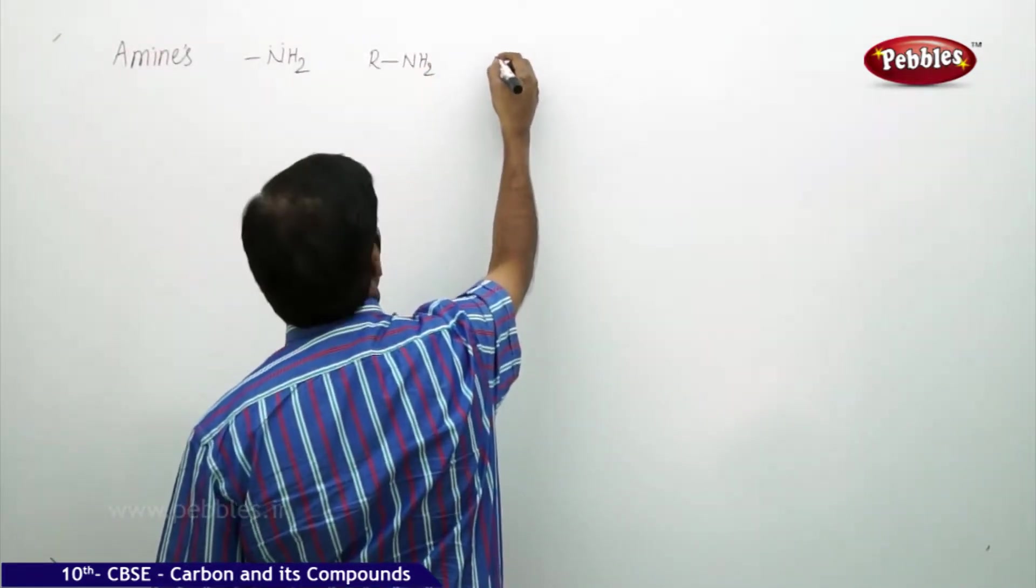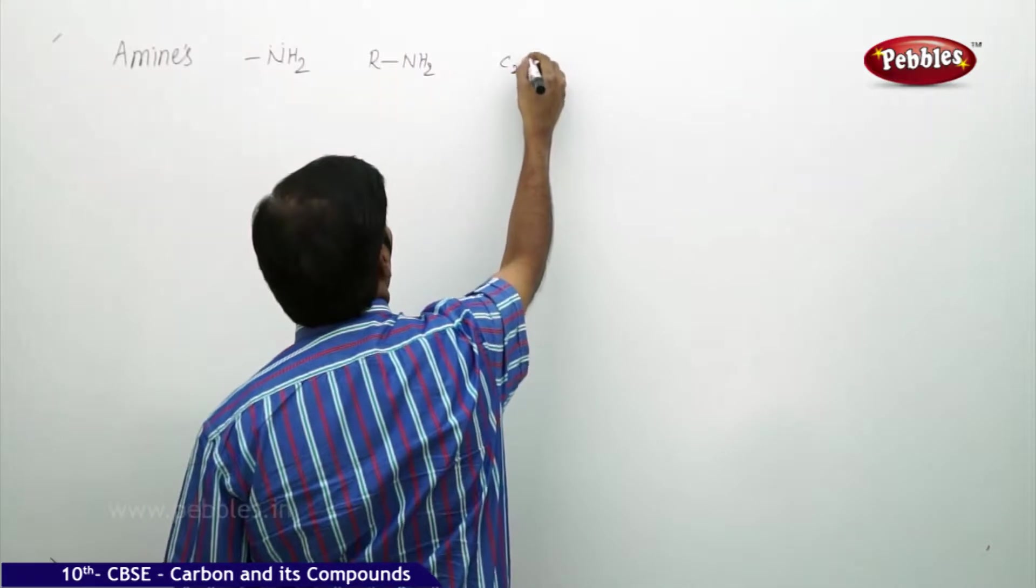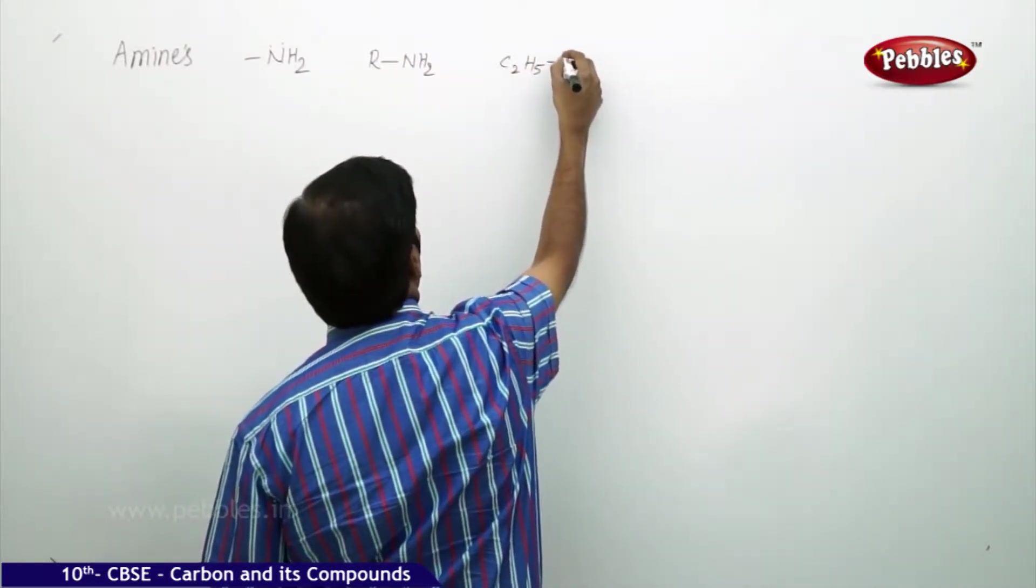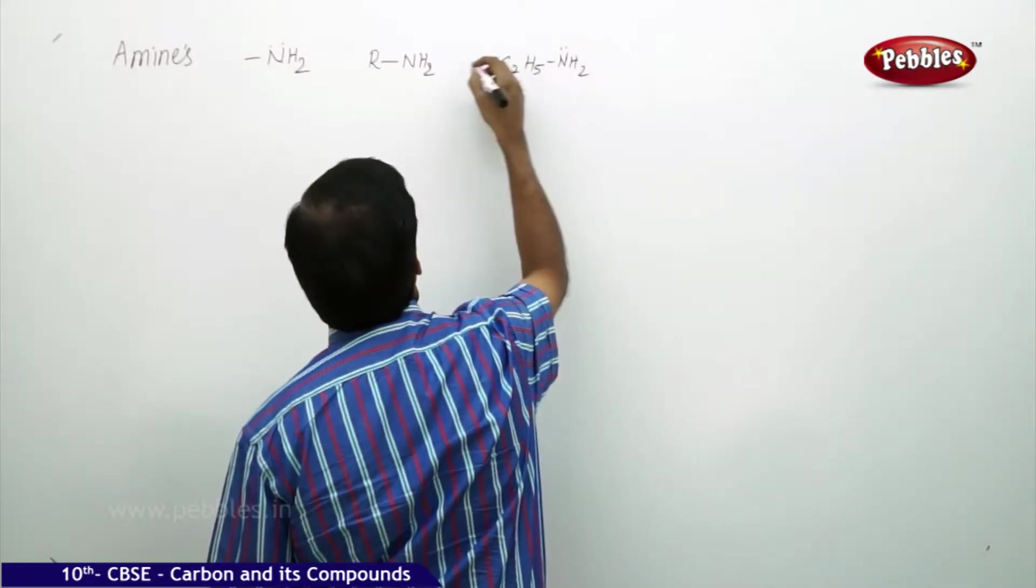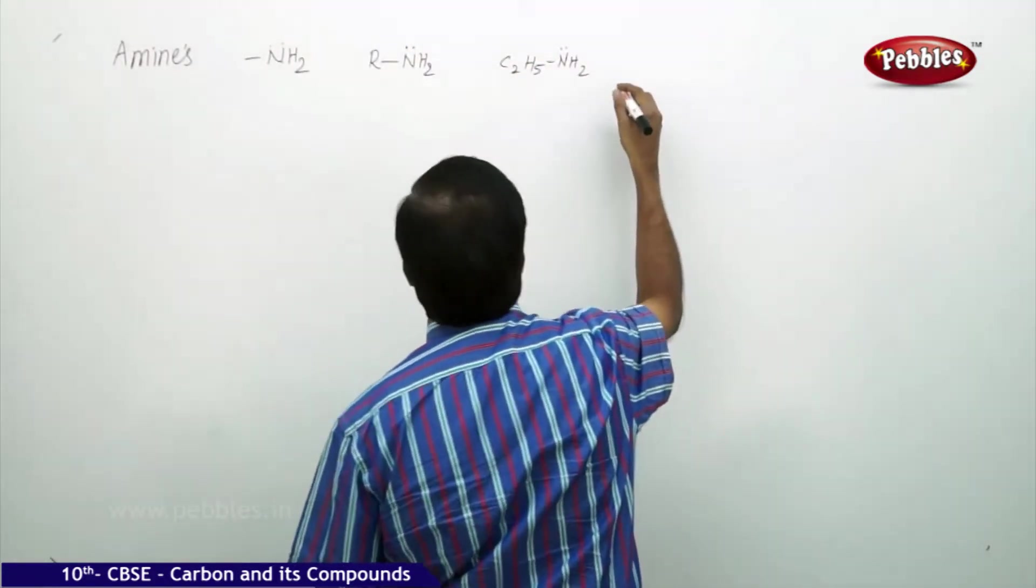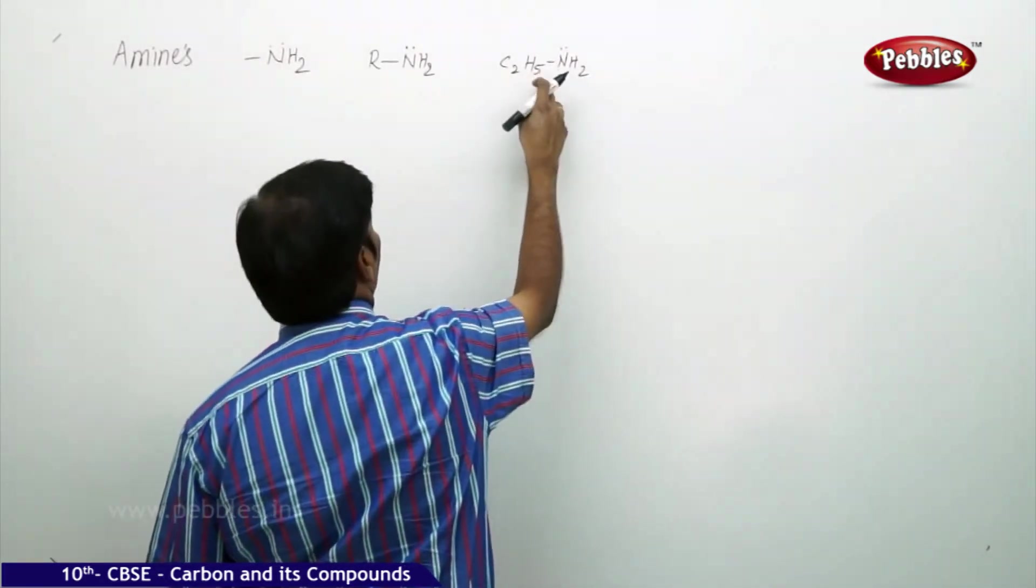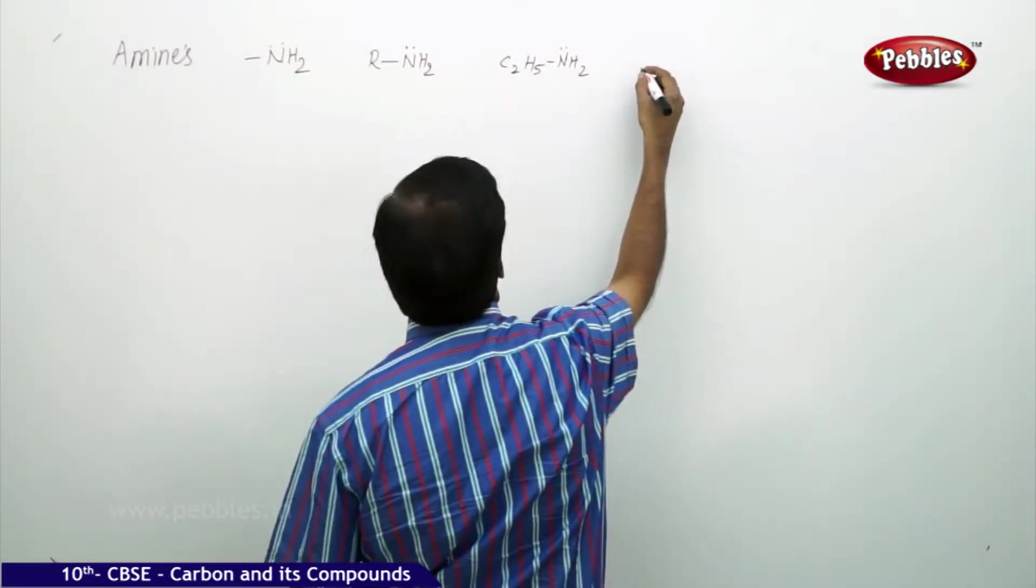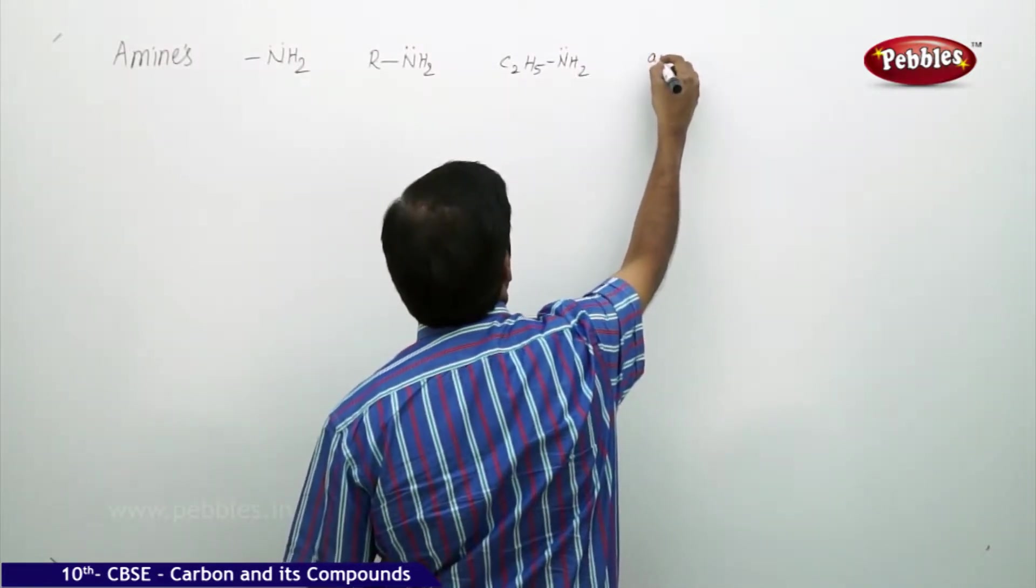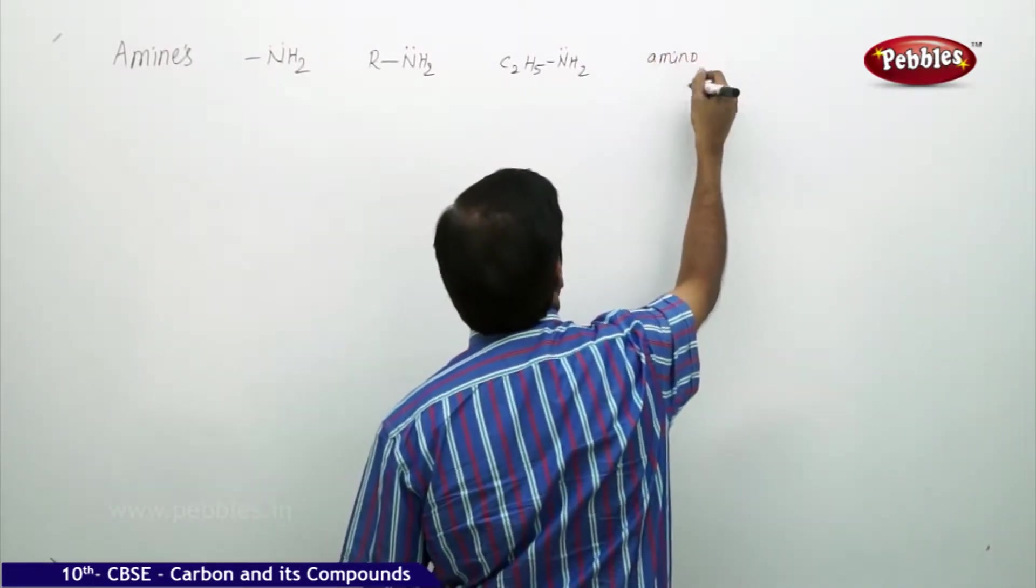Example: you can take C2H5-NH2 with a lone pair on nitrogen. You can take this as the example. And here, secondary suffix you can simply give amino. Amino is the secondary suffix.